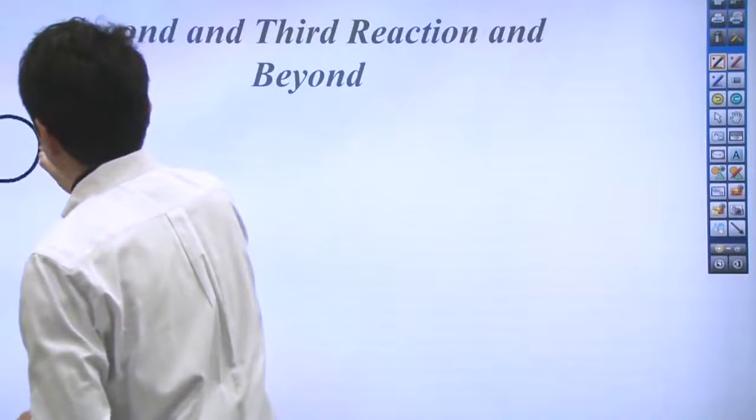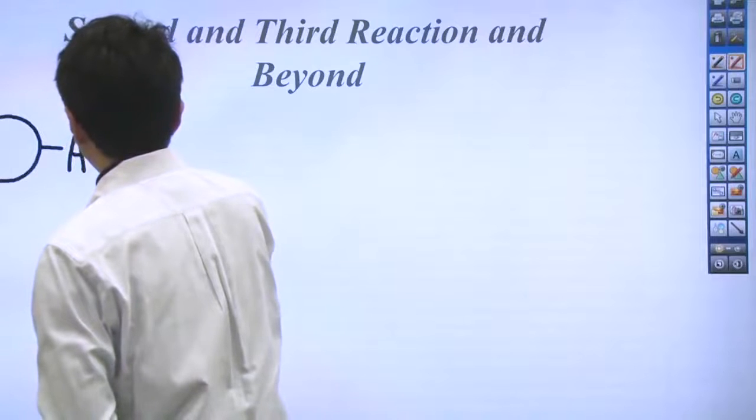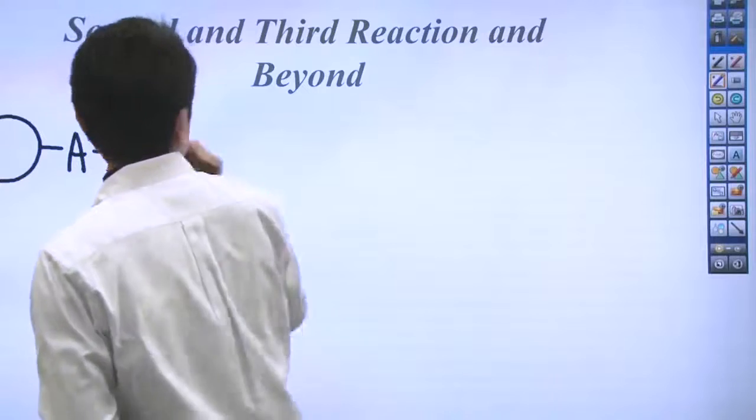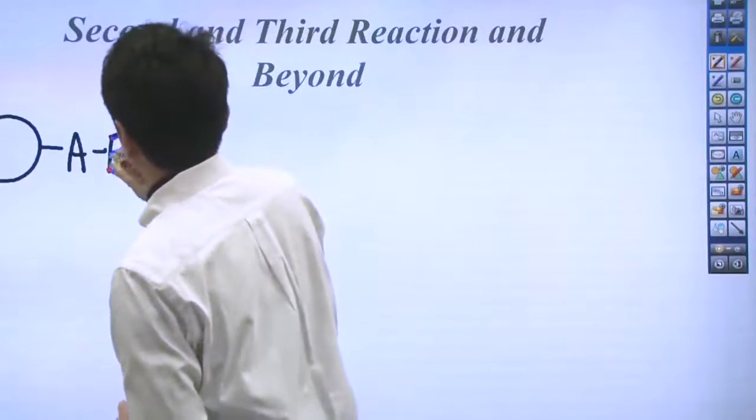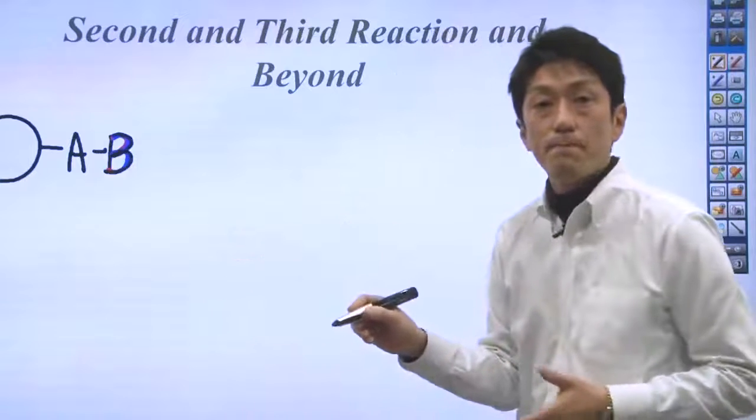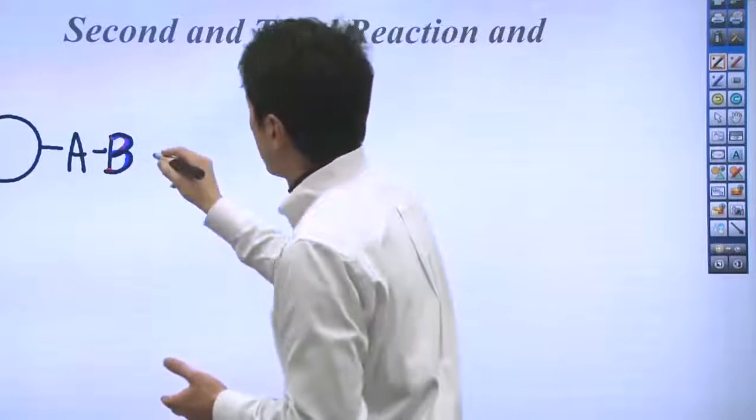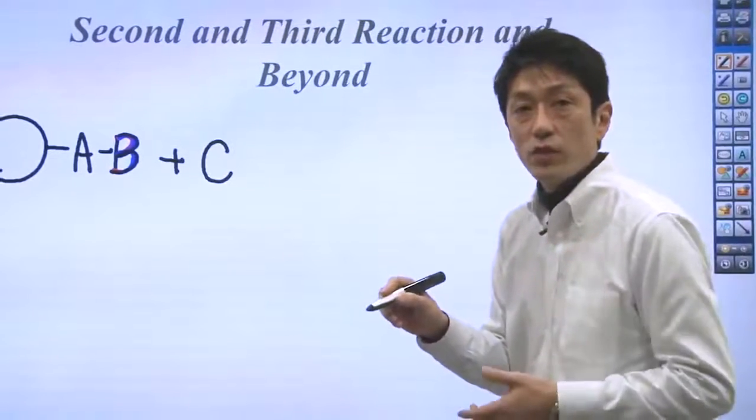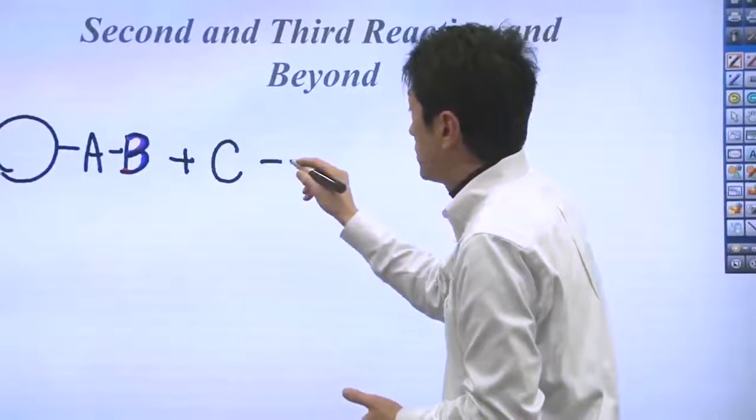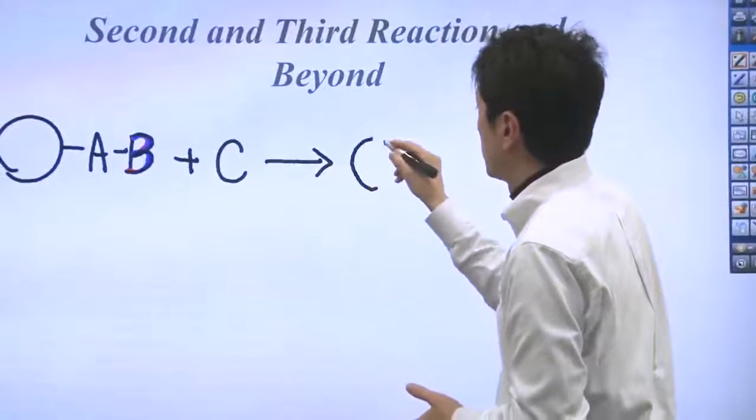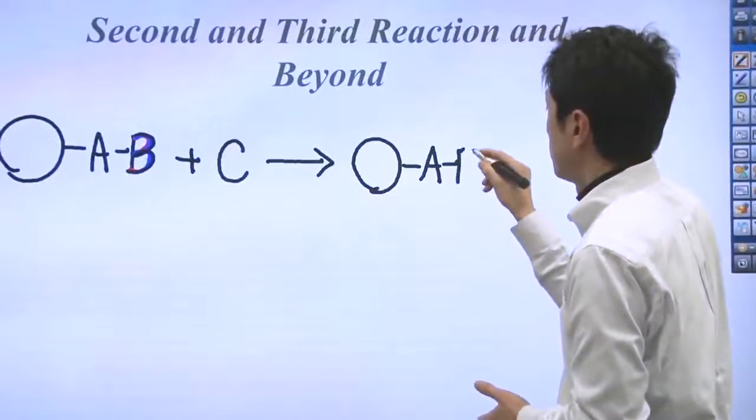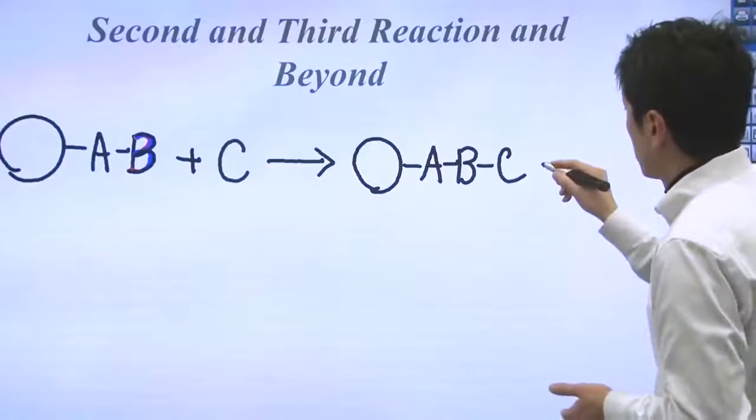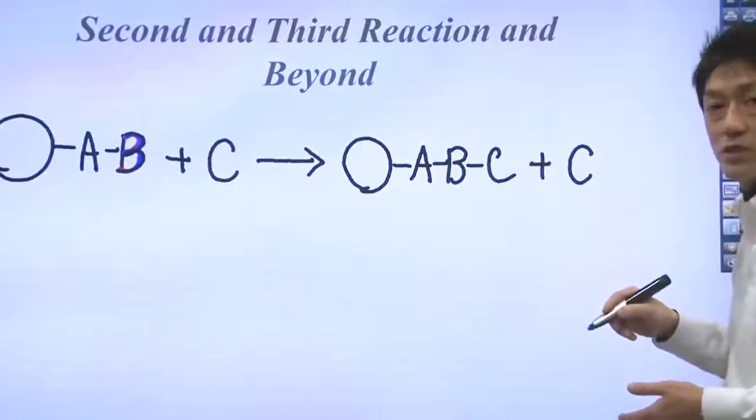From the last reaction, you got AB attached to the large beads. Then you add excess amount of C this time. Because C reacts with B, ABC is formed on the large beads, plus you have non-reactive C left.